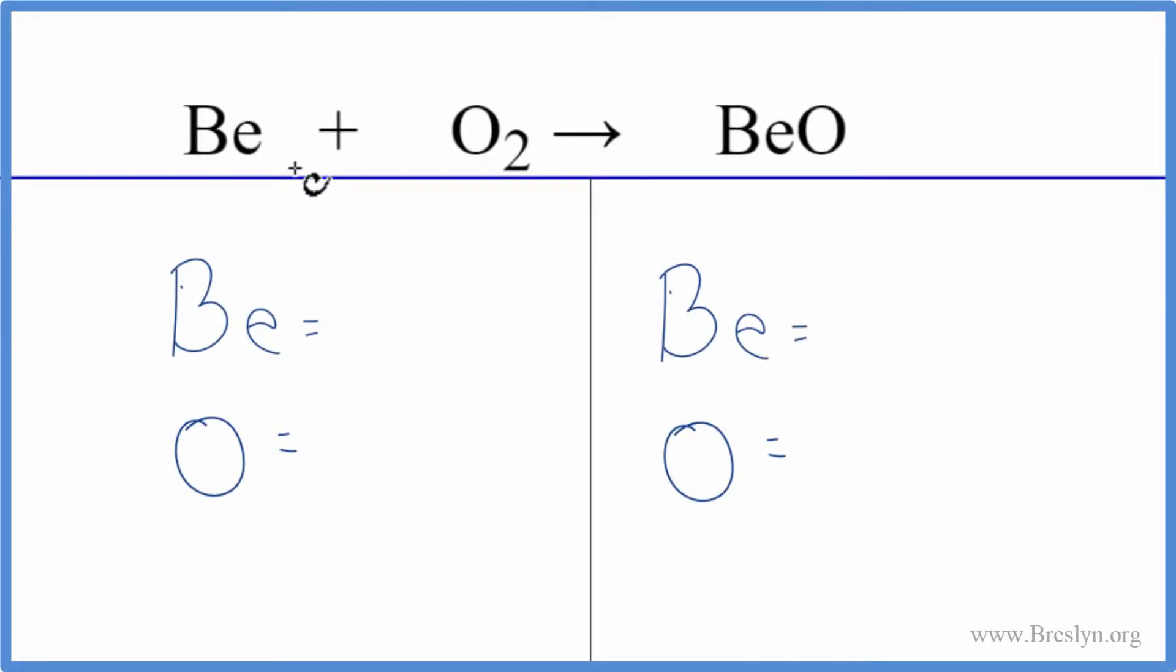To balance this equation, beryllium plus oxygen gas yields beryllium oxide. Let's count the atoms up on each side of the equation. We have one beryllium and then two oxygen atoms.